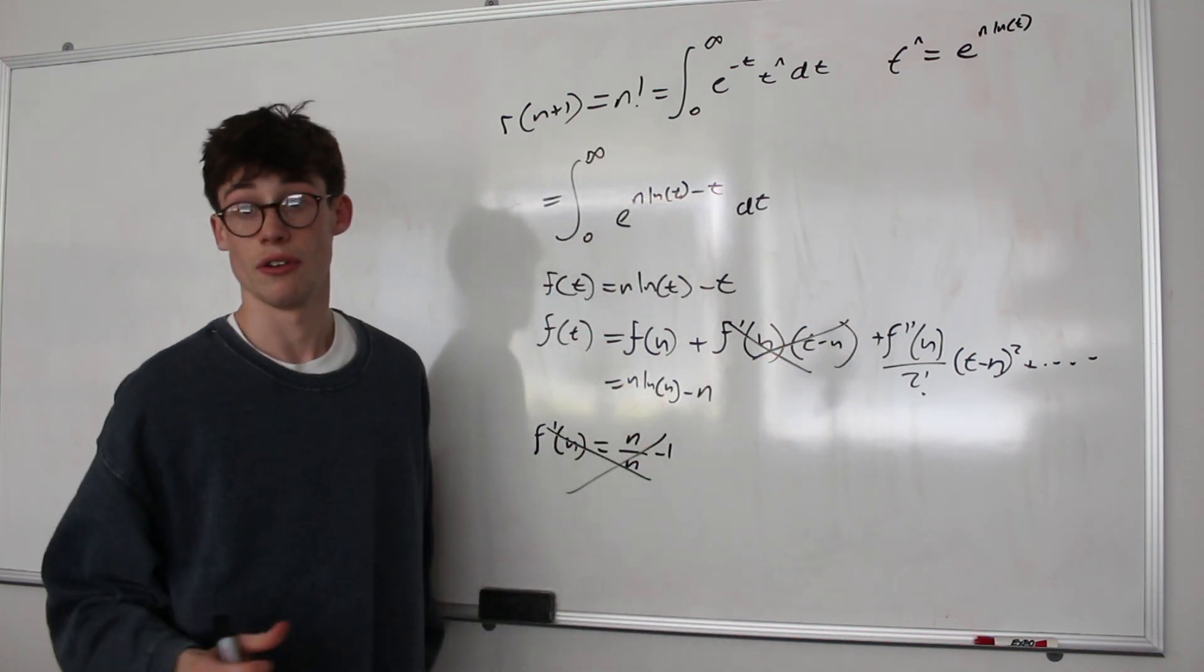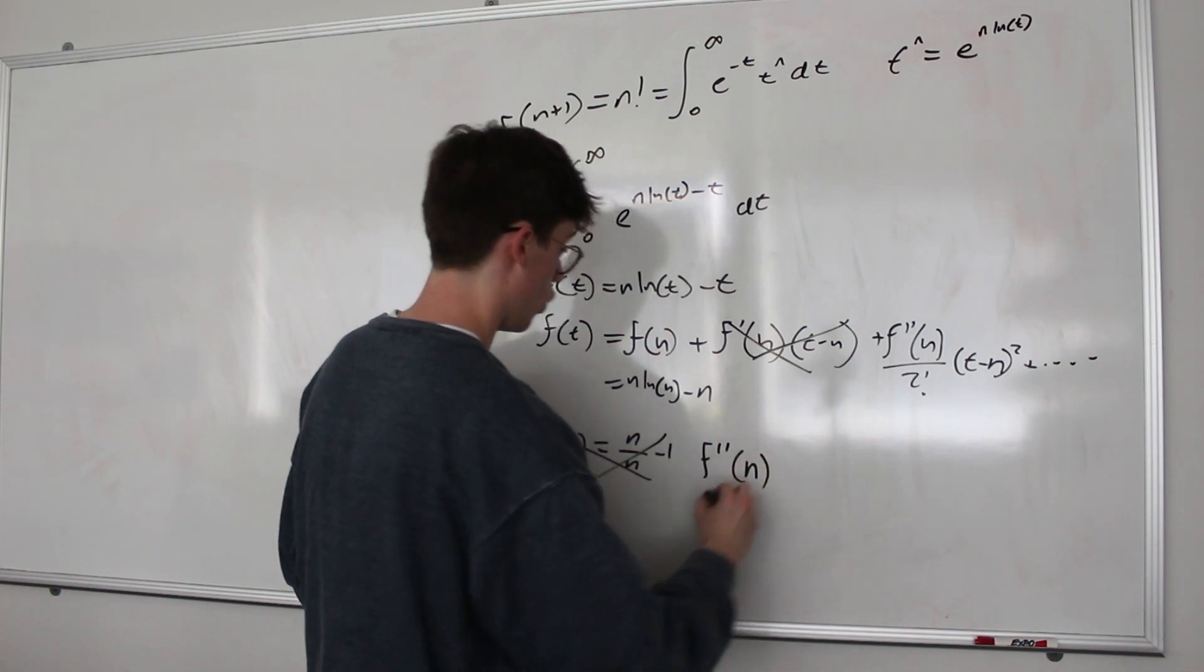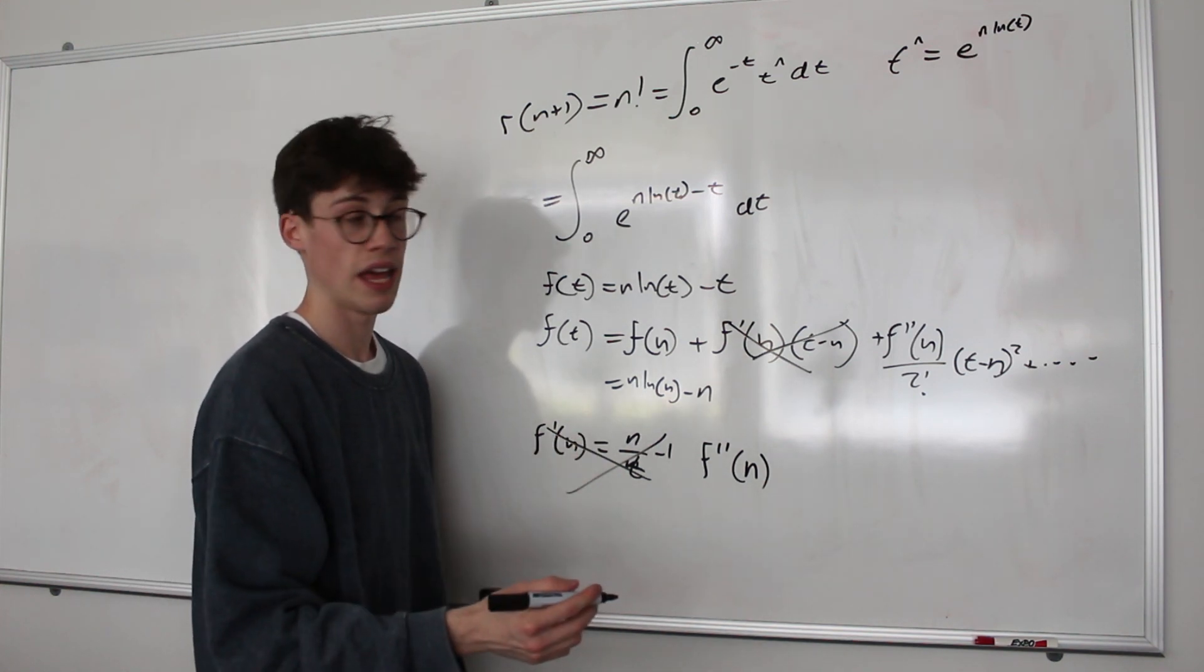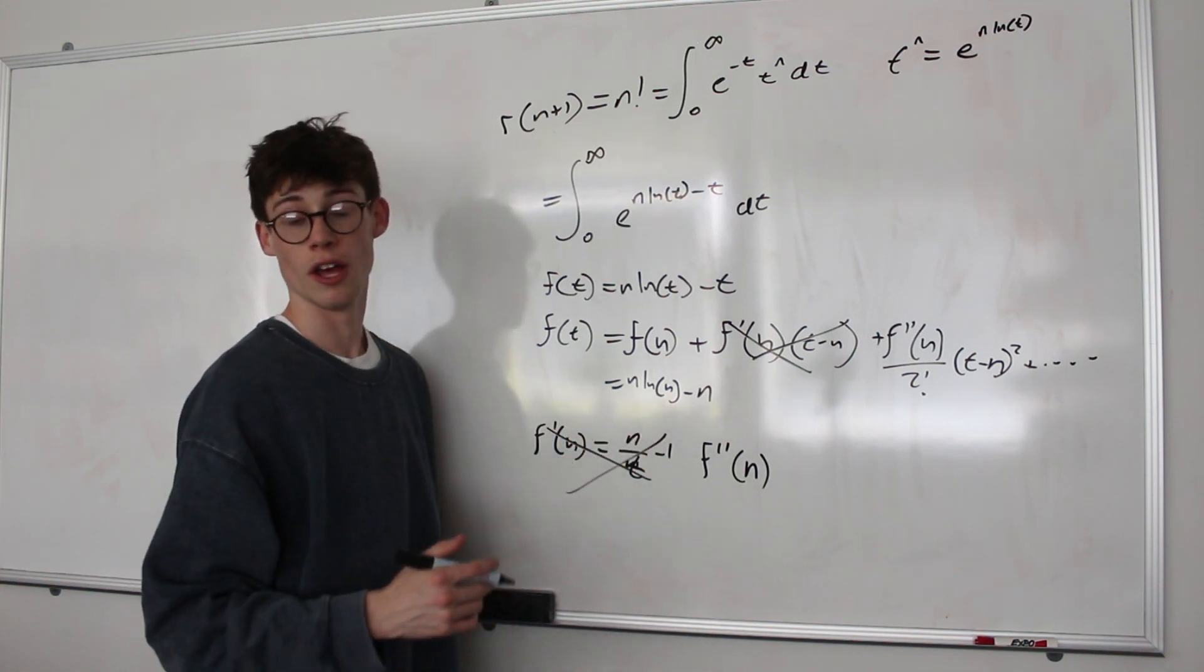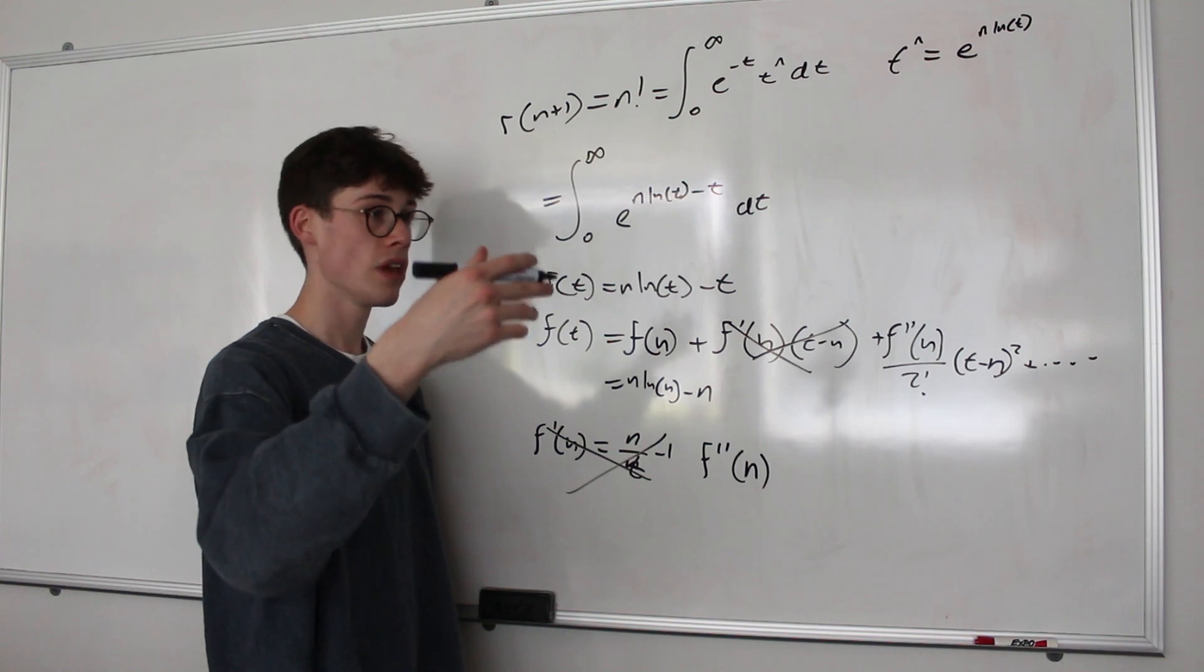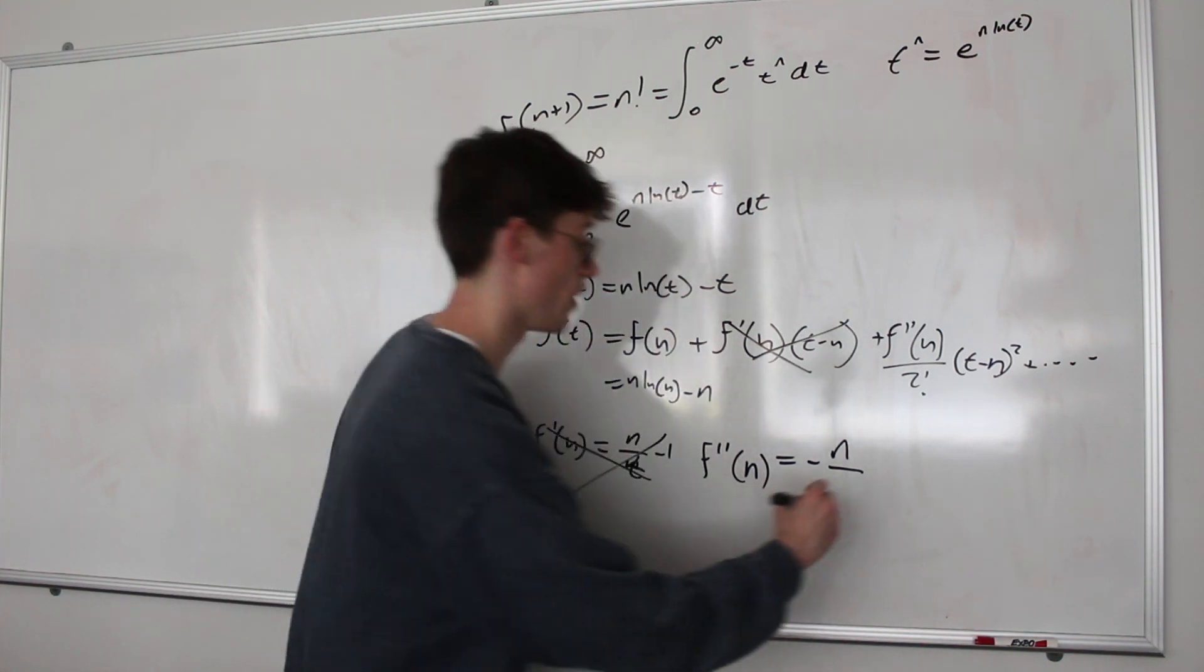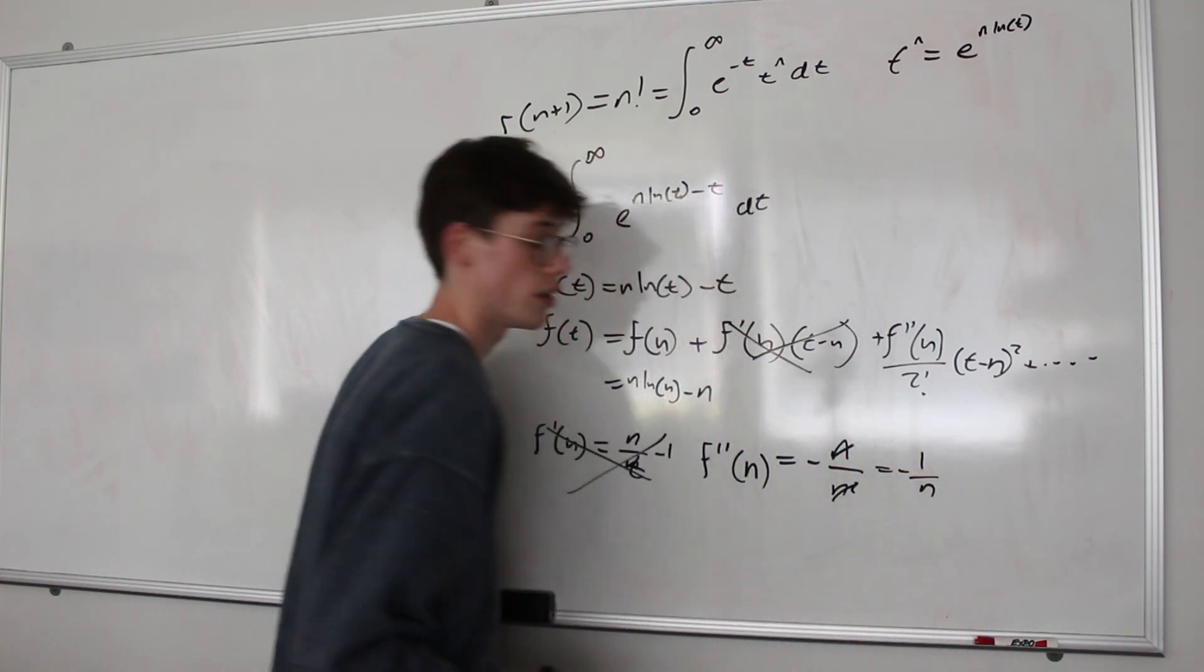So now let's look at how the second derivative behaves. Well, f prime prime of n is going to be equal to the derivative of n over t minus 1 with respect to t and then subbing in n for t. So if we differentiate negative 1, it's a constant, so we ignore it. And so we've just got to derive n over t. And of course that's just power rule. That's n times t to the negative 1. We bring the power down and take one away from the power. And so that leaves us with negative n over t squared. But since we're evaluating at n, it will be over n squared. And you can clearly see a nice cancellation there, leaving us with just negative 1 over n.